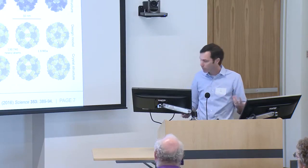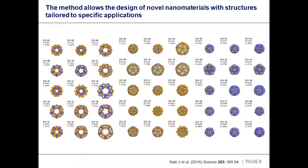That gives you the ability to design structures tailored to specific applications. You can make structures with big pores or small pores, 16, 17, or 18 nanometers — whatever you want. You can have termini on the outside for fusion, termini on the inside for packaging. You're not just relying on ferritin. If ferritin doesn't work for you, you're out of luck.